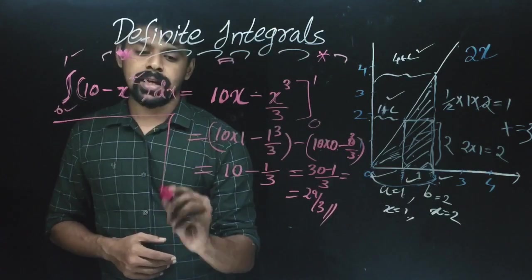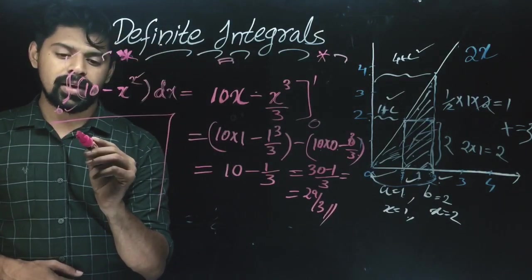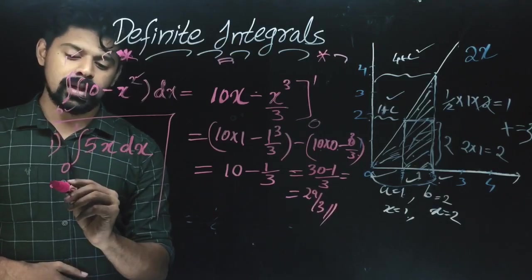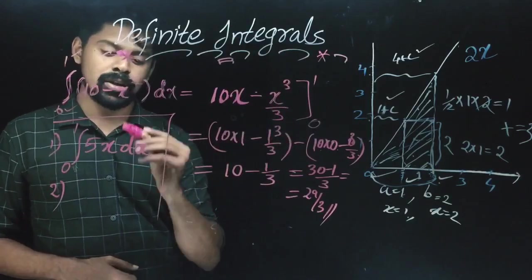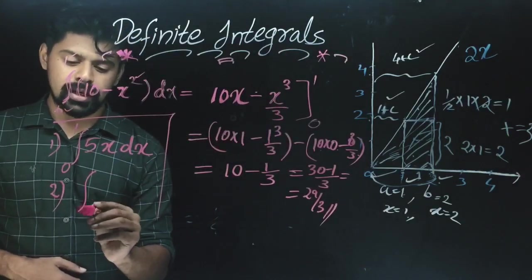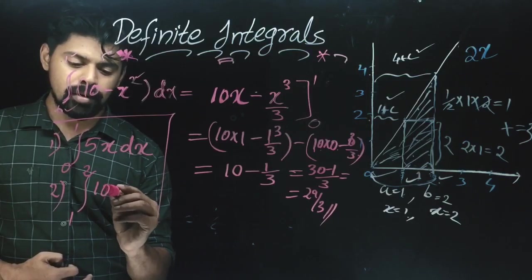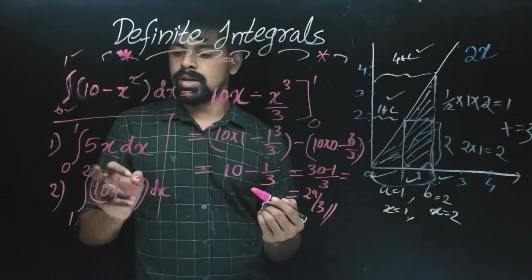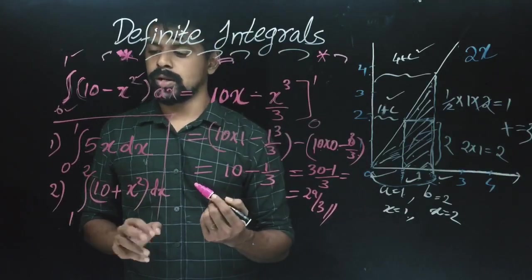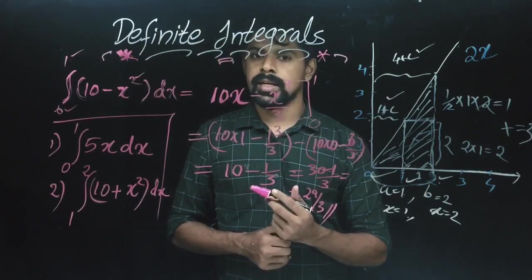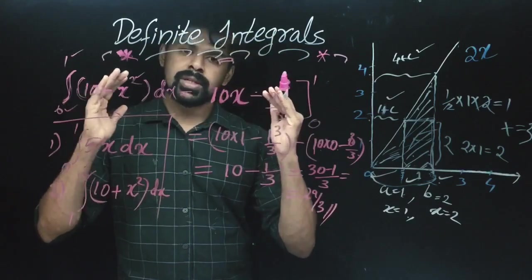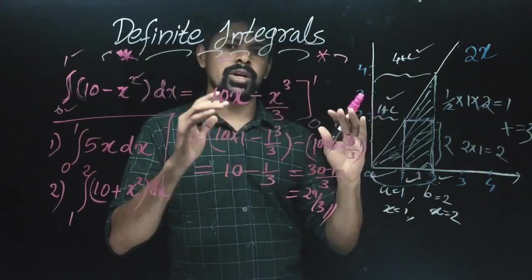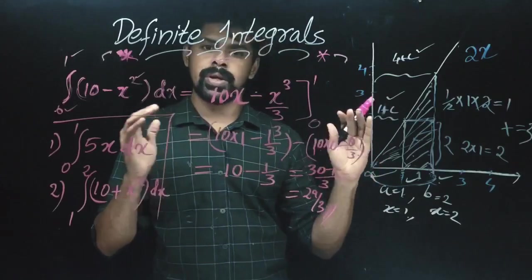Now you can do homework. Find the definite integral from 0 to 1 of 5x dx. You can also try: integral from 1 to 2 of (10 plus x squared) dx. Now we have learned the definite integral. This is the unit in elementary calculus, and we have explained the entire video.